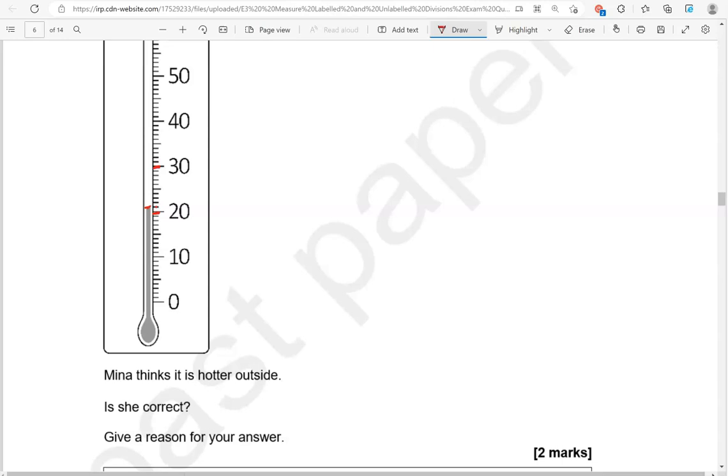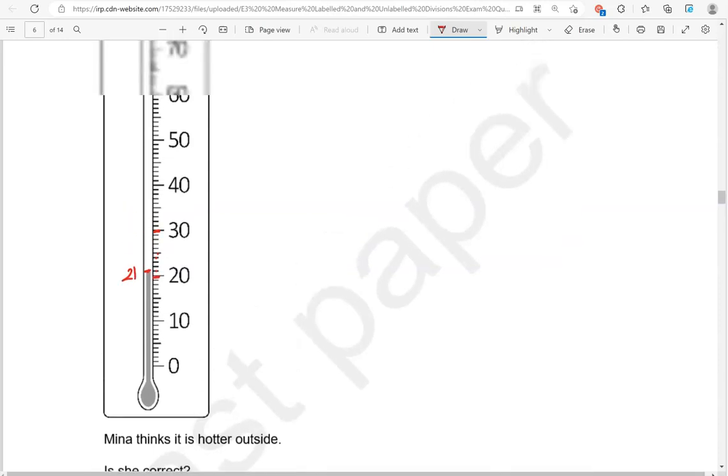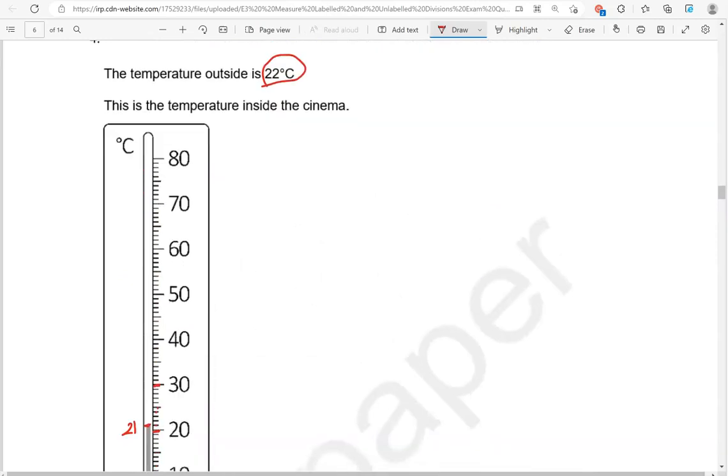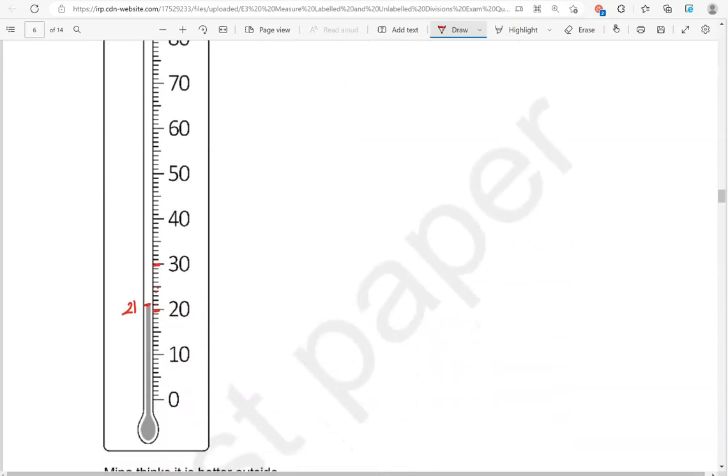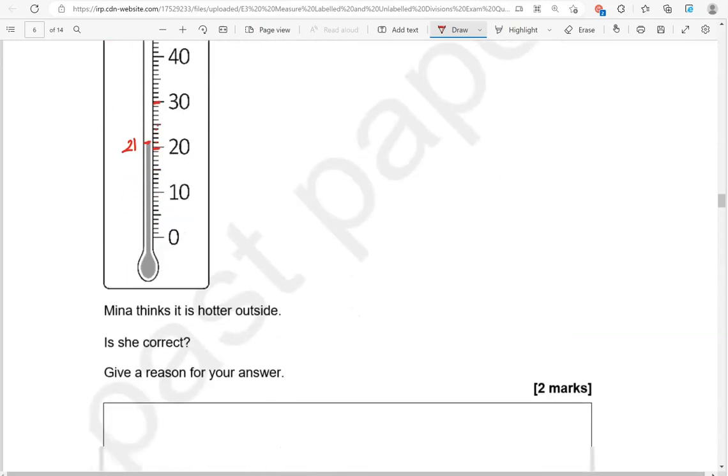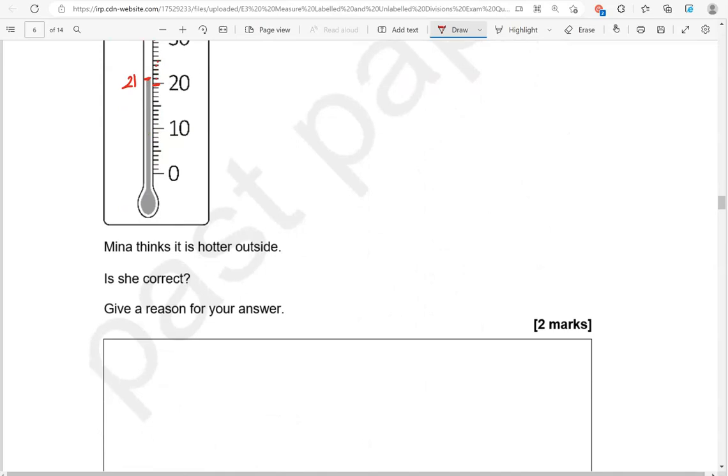21, 22, 23, 24, 25, 26, 27, 28, 29, 30. So it's going up in 1s, so this is 21. Outside it's 22 degrees Celsius, so inside is only 21 degrees Celsius. So Mina is correct. It's only 21 degrees Celsius inside.